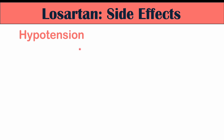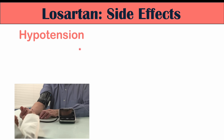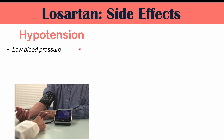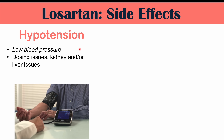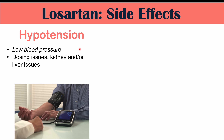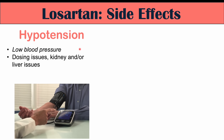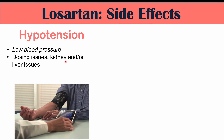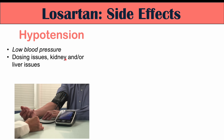We can also see hypotension, or low blood pressure, with Losartan use, as with many other antihypertensives. This is likely due to dosing issues — perhaps too high a dose being given — or patients may have kidney or liver issues. Kidney issues may reduce excretion of the drug, and liver issues may reduce metabolism, leading to overdosing and too great a reduction in blood pressure.